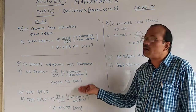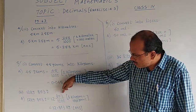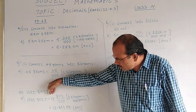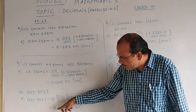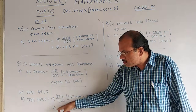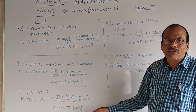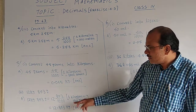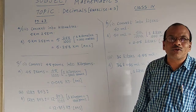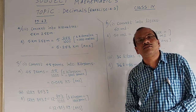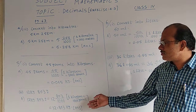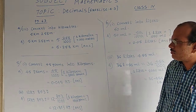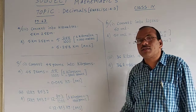Since there are 3 zeros in the denominator, the point should be arranged after 3 digits. First digit, second digit, third digit — after 3 digits I have arranged the point. Then 12 is dropped down as it is. Finally, we got the answer: 12.843 kilograms, which is equal to the given question 12 kg 843 grams.